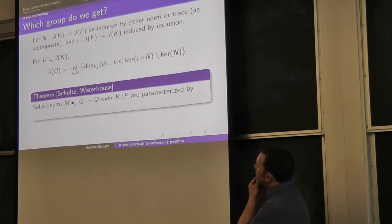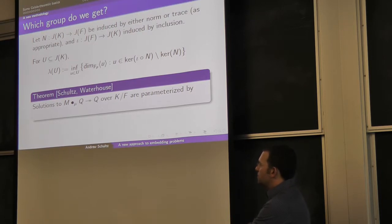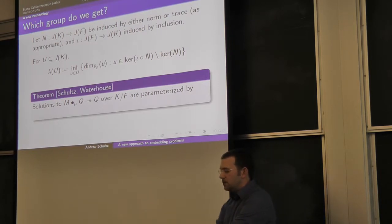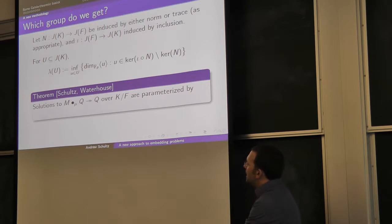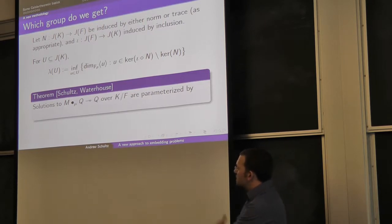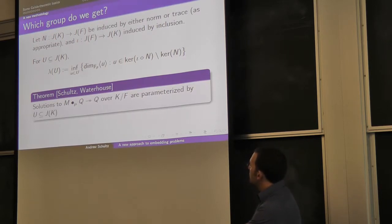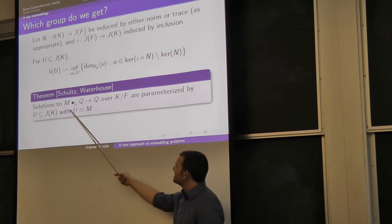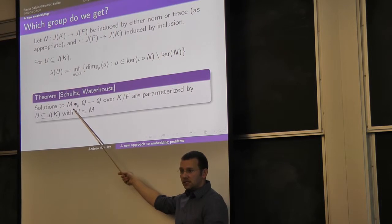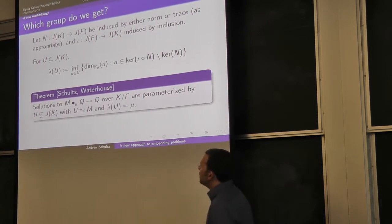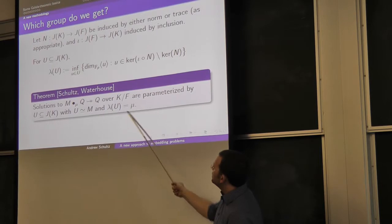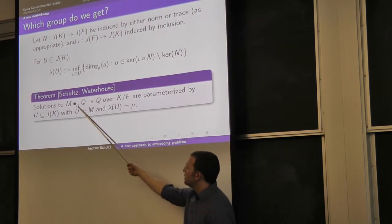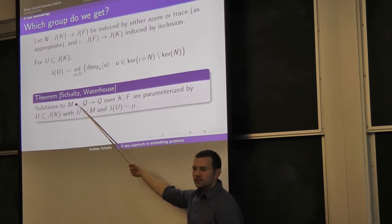This is a theorem that Waterhouse essentially wrote, but you can generalize it. If you have an embedding problem like the ones I wrote down, all solutions to that embedding problem are parametrized by modules inside J(F,K) that are isomorphic to the kernel. The only other thing you have to worry about is this lambda invariant of U, and you want it to exactly match the μ that keeps track of the isomorphism class of the group.